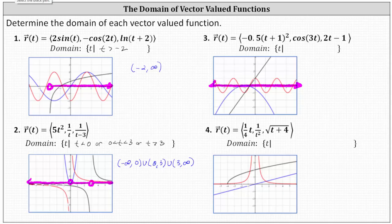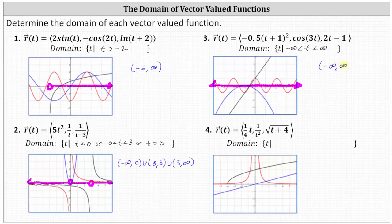Using set builder notation, we have t such that t is greater than negative infinity and less than positive infinity. Or using interval notation, we have the open interval from negative infinity to positive infinity.